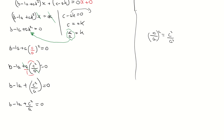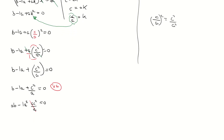To clear the fraction, I multiply through by a. That gives: a times b equals ab; a times minus a equals minus a squared; and a times c squared over a — the a's cancel — leaving plus c squared. So I now have ab minus a squared plus c squared equals zero.